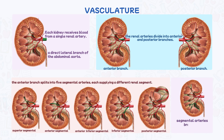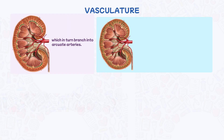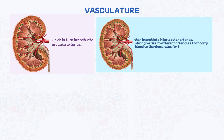These segmental arteries further branch into interlobar arteries, which in turn branch into arcuate arteries. The arcuate arteries then branch into interlobular arteries, which give rise to afferent arterioles that carry blood to the glomerulus for filtration. The kidney has an exceptionally rich blood supply.